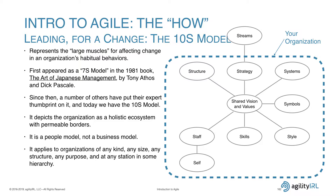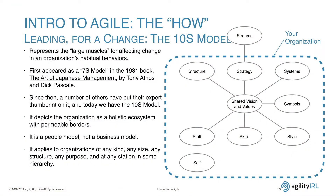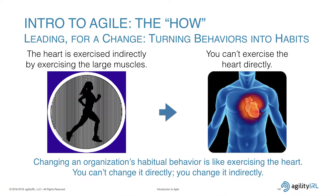I found what was called the 7S model, from the book 'The Art of Japanese Management' by Tony Athos and Dick Pascal. Different consultants have expanded it — we're now up to 10S. It depicts the organization as a holistic ecosystem with permeable borders. It is a people model, not a business model — nowhere on it will you see capital or land. It applies to organizations of any kind, any size, any function. How you calibrate the variables in the 10S diagram is how you're going to affect habits.